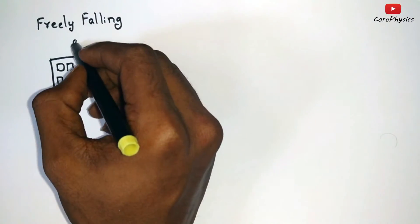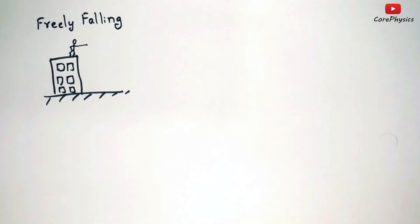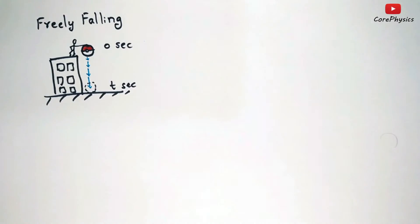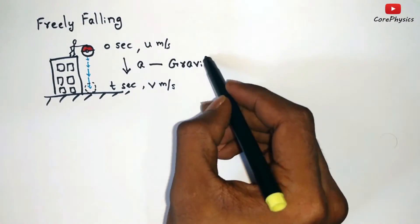Now let's apply these equations on a freely falling problem. Let's say a pokemon ball is being dropped from the top of a building and it hits the ground after t seconds. The velocity of the ball increases in the downward direction at a constant rate because the acceleration due to gravity is a constant value.